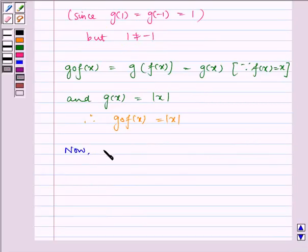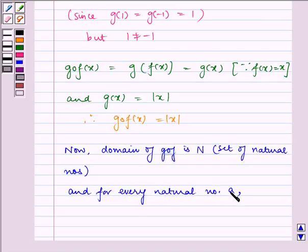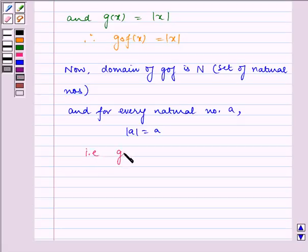Now, the domain of g of f is N, that is the set of natural numbers. And for every natural number a, the absolute value of a equals a. That is, g of f has a unique image.